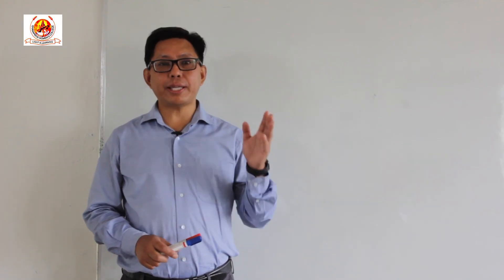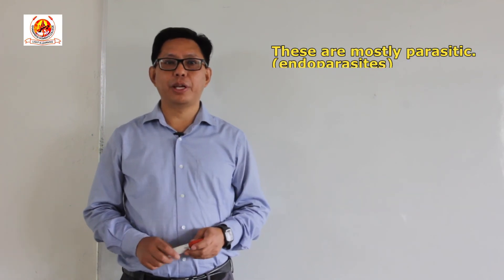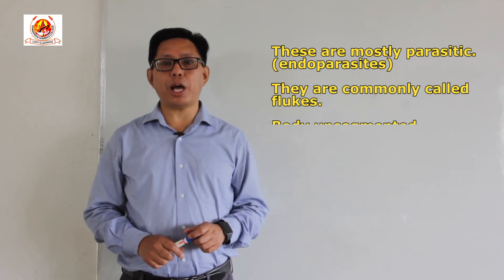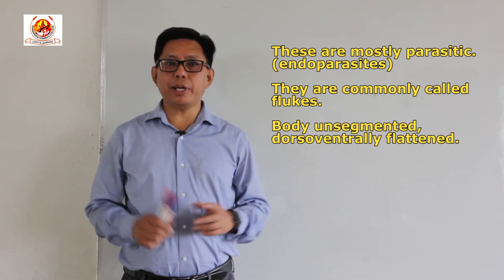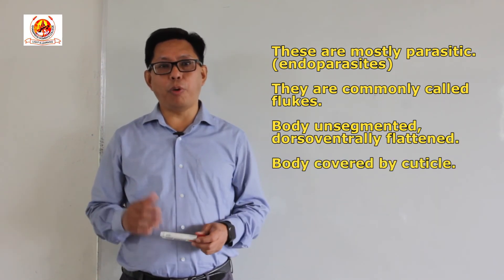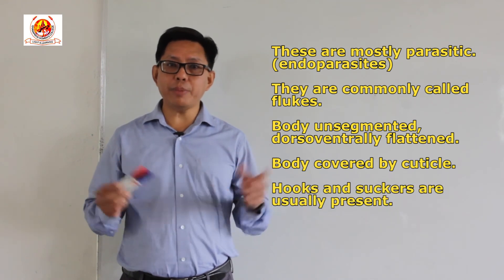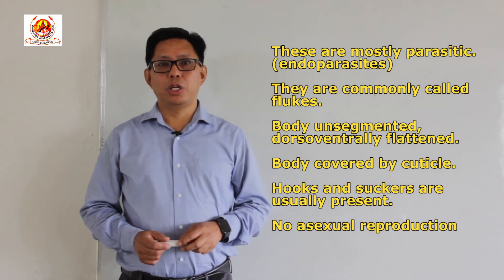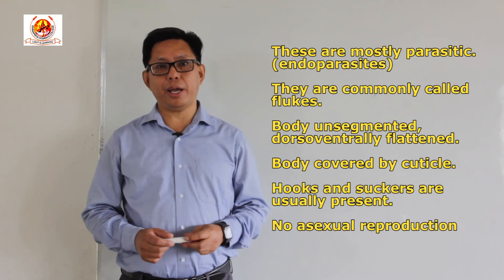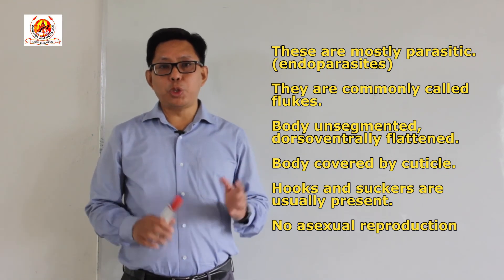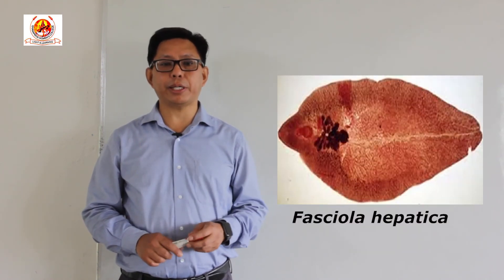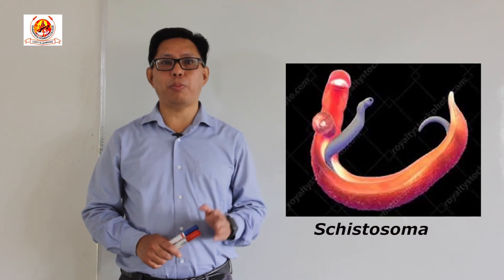Coming to the second class, Class Trematoda: they are mostly parasitic in nature and may be ectoparasites or endoparasites. They are commonly known as the flukes. Similarly, they are unsegmented and dorso-ventrally flattened. The body may be covered by a cuticle. Hooks and suckers are usually present. There is no asexual reproduction. Examples include Fasciola hepatica, Schistosoma, and Polystoma.